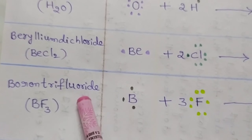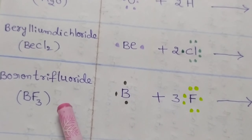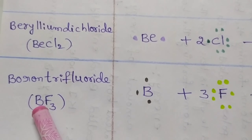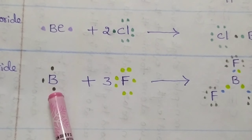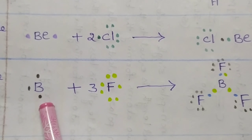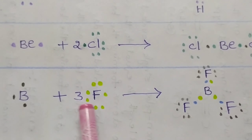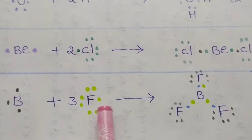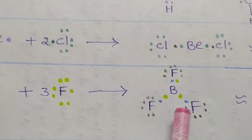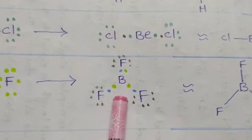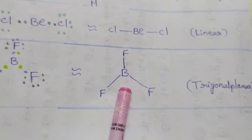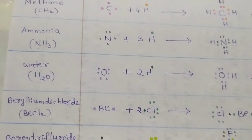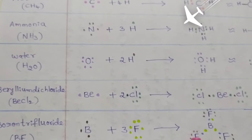Now we discuss the Lewis dot structure of boron trifluoride. In the boron trifluoride molecule, the central atom is boron. This boron contains three valence electrons and reacts with three fluorine atoms, which each contain seven valence electrons, to form boron trifluoride. The molecule is trigonal planar in shape. These are the Lewis dot structures of some covalent molecules. Thank you for watching this video.